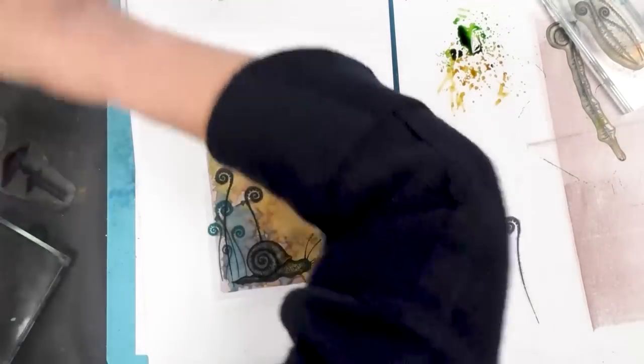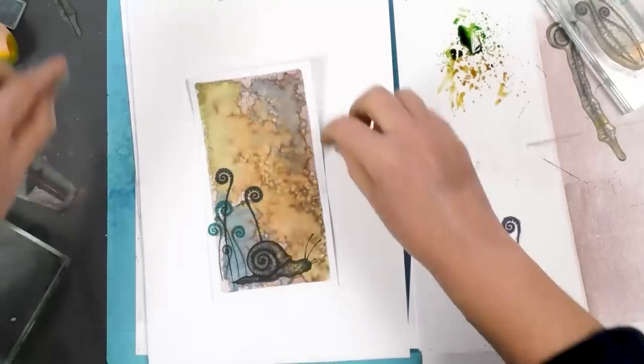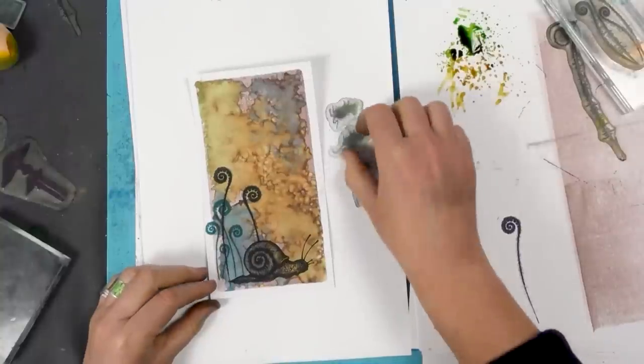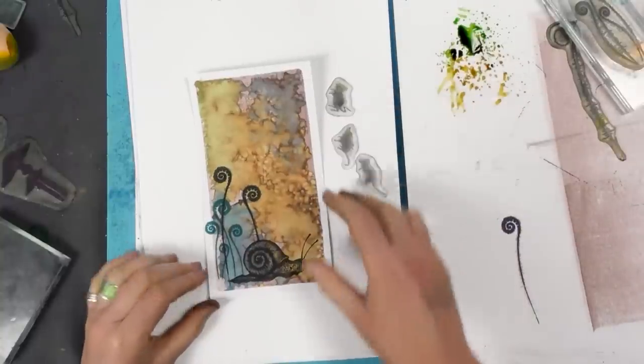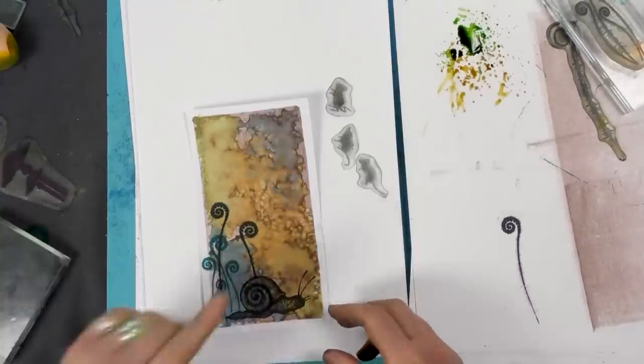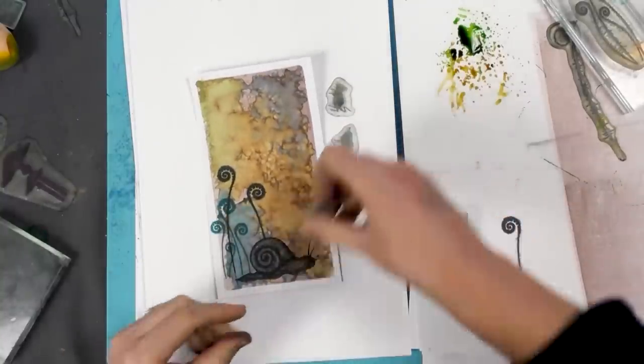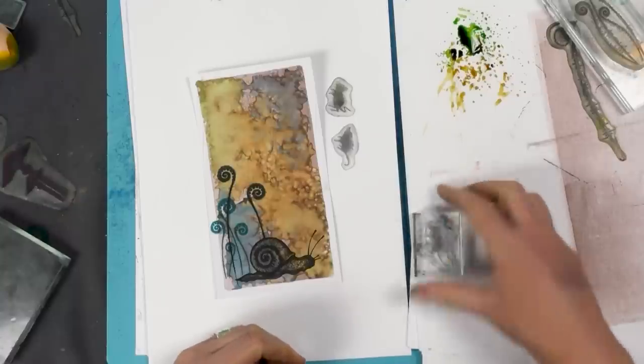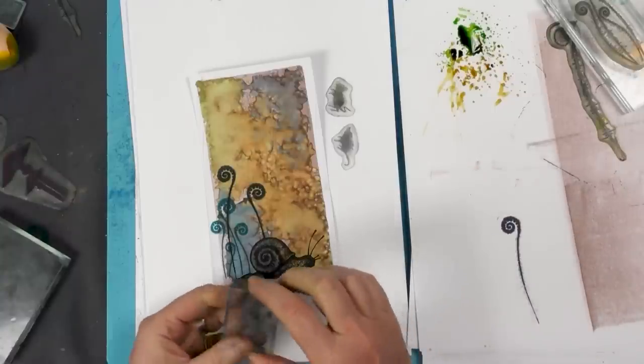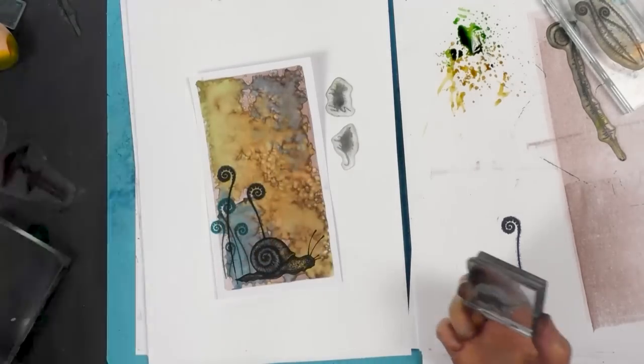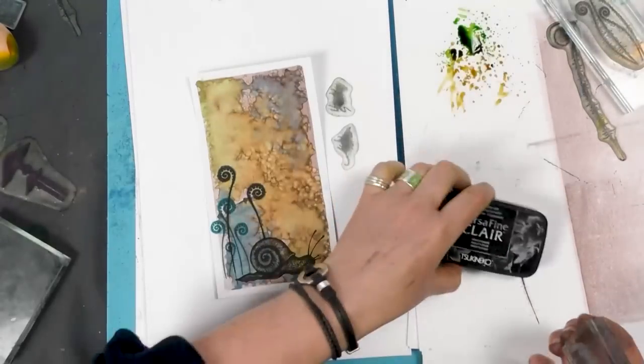So now we need our little mice, which I have here. I've got three little mice, and we're going to pop one on the snail and one on the ferns here. So let's start with the one at the top there. I'm going to ink up in the black, in the Nocturne.